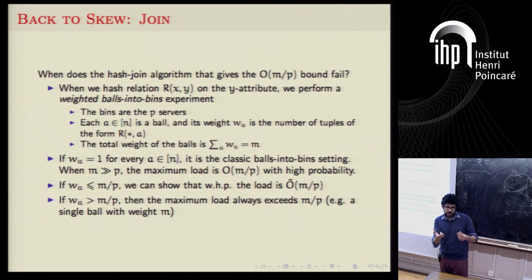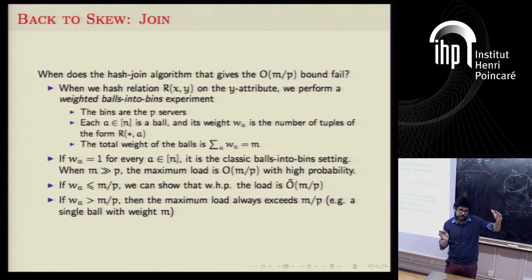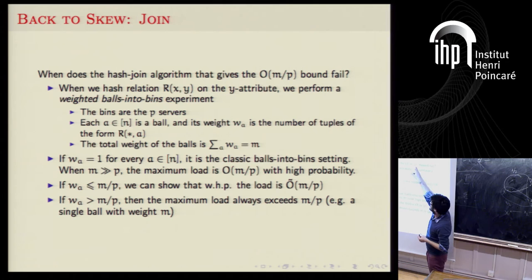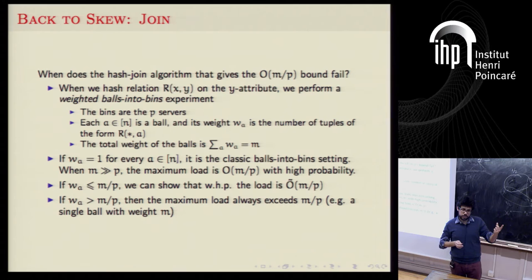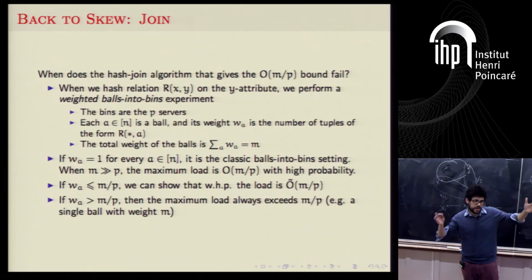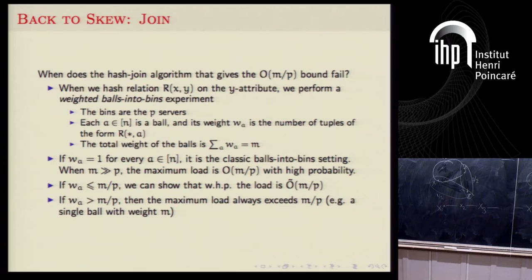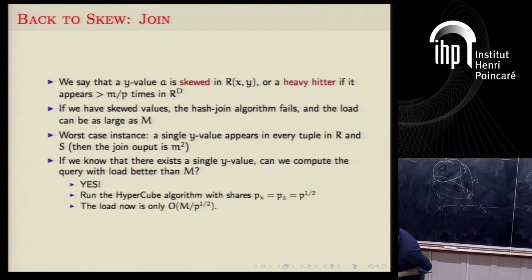On the other hand, if the weight of a ball exceeds m/P, that ball must go into some single server, so the maximum load will be at least that weight. If you have a single y value that connects with all possible values, you have one huge ball of size m — you'll send all your data to one machine, achieving no parallelism. Imagine the worst case: value 1 connects with all m values, giving a ball of size m and no distribution.